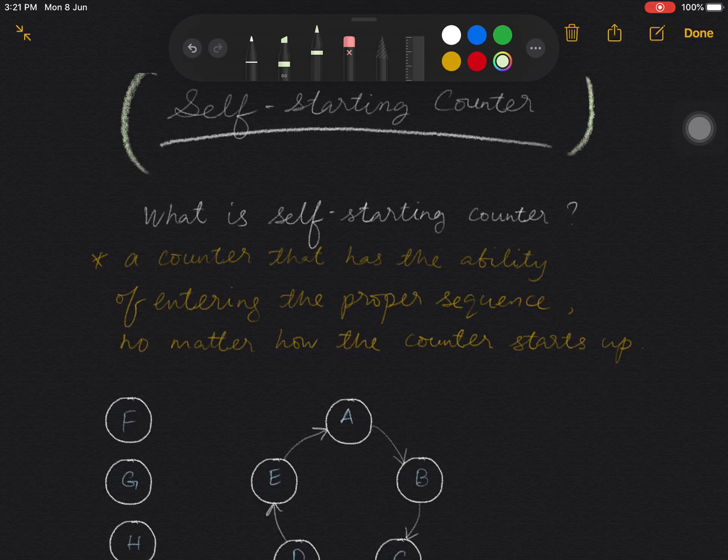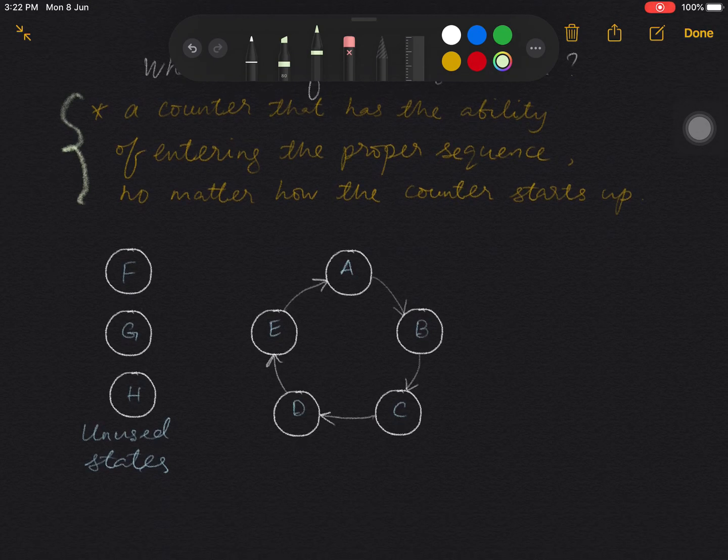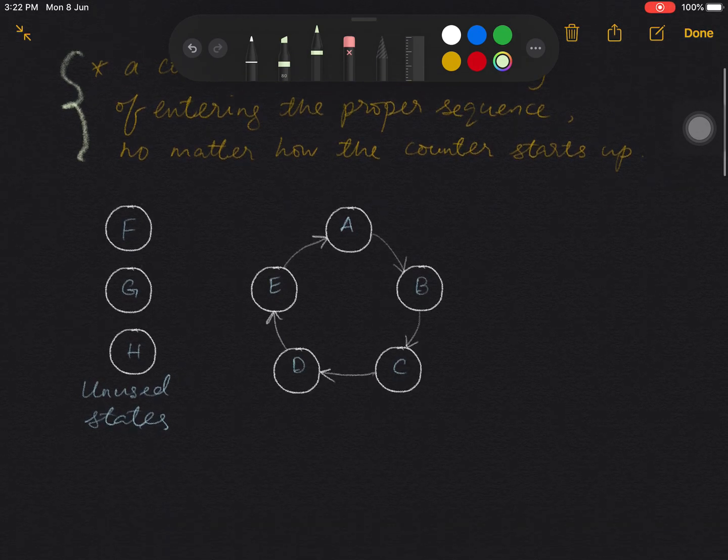So we get to the definition of the self-starting counter. That is a counter that has the ability of entering the proper sequence or the correct sequence no matter how the counter starts up, which means suppose that this is the counting sequence of your counter, A, B, C, D, E, and repeat,